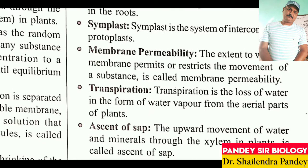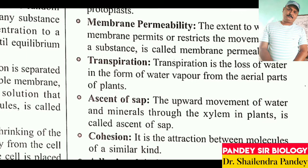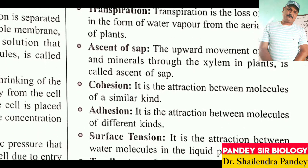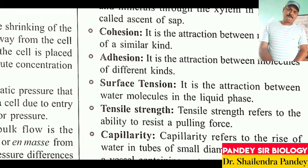Transpiration is the loss of water in the form of water vapor from the aerial parts of the plant. Water leaving the plant body as vapor from the aerial parts is called transpiration. Ascent of sap: the upward movement of water and minerals through the xylem in plants is called ascent of sap — movement of water and minerals upward through xylem.